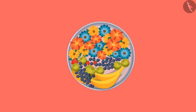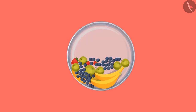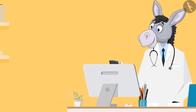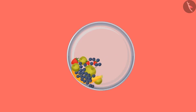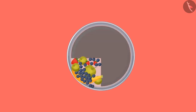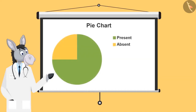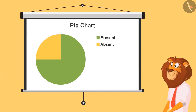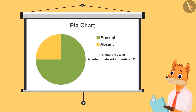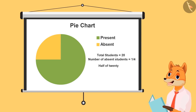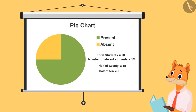This is a prayer plate. In this, flowers and fruits are kept in this way. If the priest offers all the flowers to the god, how much part of the plate will remain empty? Half. Absolutely correct. And if this much fruit is given in the prasad, then how much of the plate will remain full? One-fourth fruits remain. Very good. This pie chart shows how many students came to class today. If the total strength of the class is 20, how many students are absent today? We'll find one-fourth of 20 because absent kids are one-fourth of the total chart. Half of 20 is 10 and half of 10 is 5. So total 5 students are absent today.